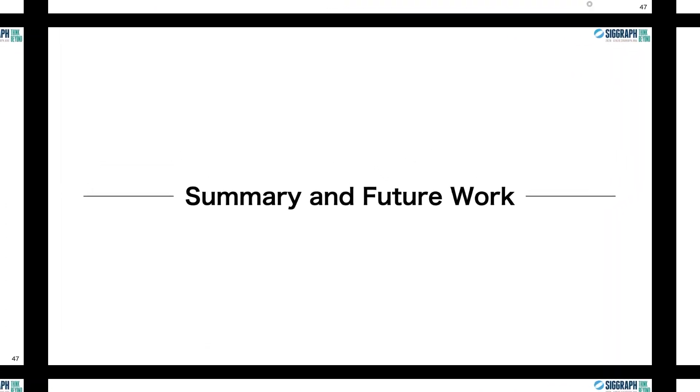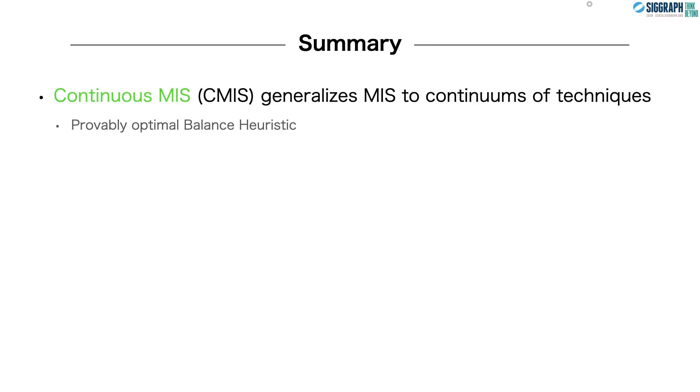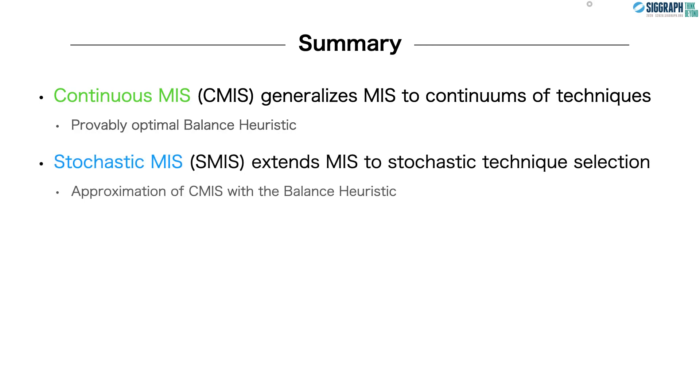Let's recap with a quick summary and then close with some potential future work. We introduced continuous multiple importance sampling, which generalizes MIS to continuums of techniques and comes with a provably optimal balance heuristic. We also introduced stochastic MIS, which extends MIS to stochastic technique selection and can be used as an approximation of CMIS with the balance heuristic. We further showed three applications of CMIS in rendering, including path reuse, spectral rendering, and photon planes. But with all of this, we have really only just scratched the surface.